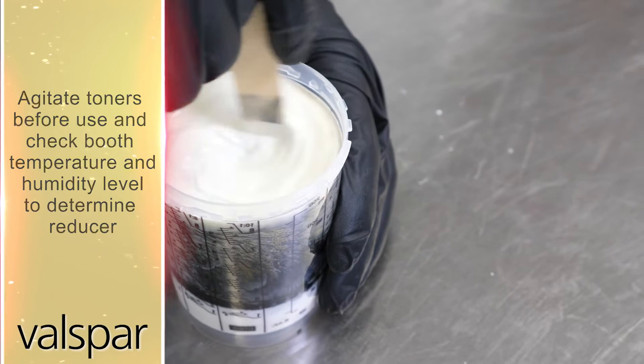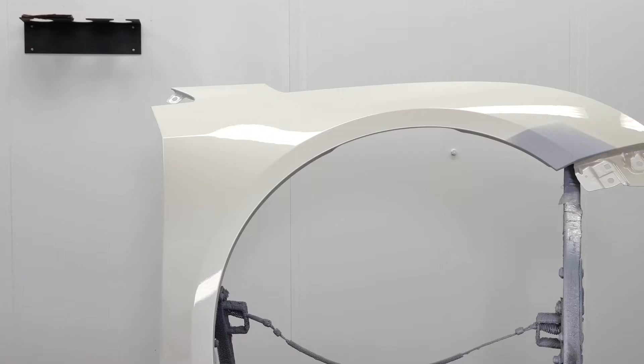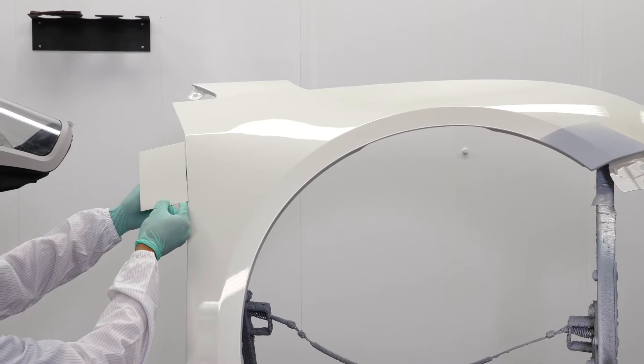Before applying any color to the repair area, we recommend spraying a letdown panel to determine how many midcoats will be needed for the job. With the test panel complete, move forward with application of color.